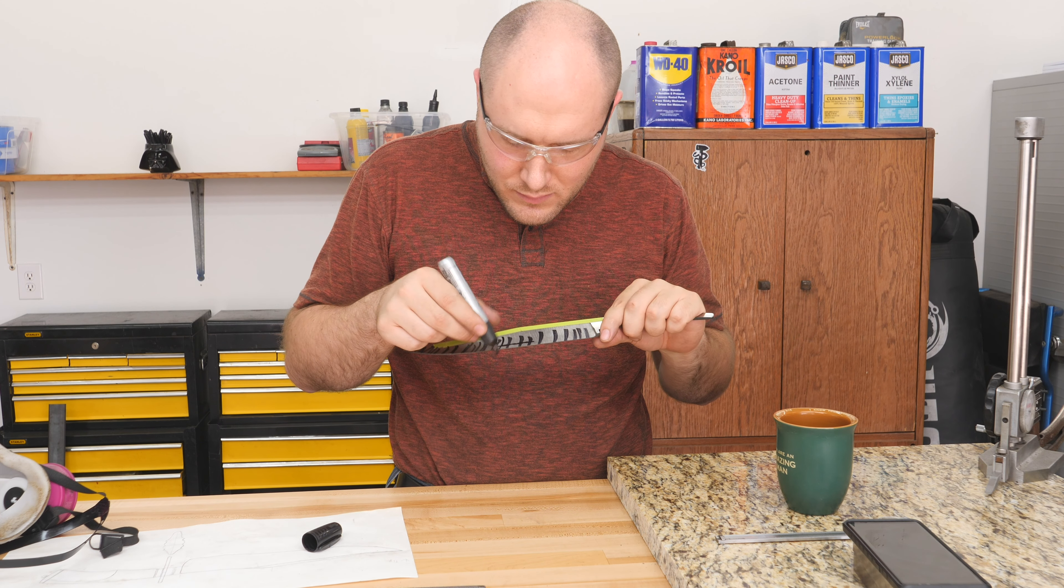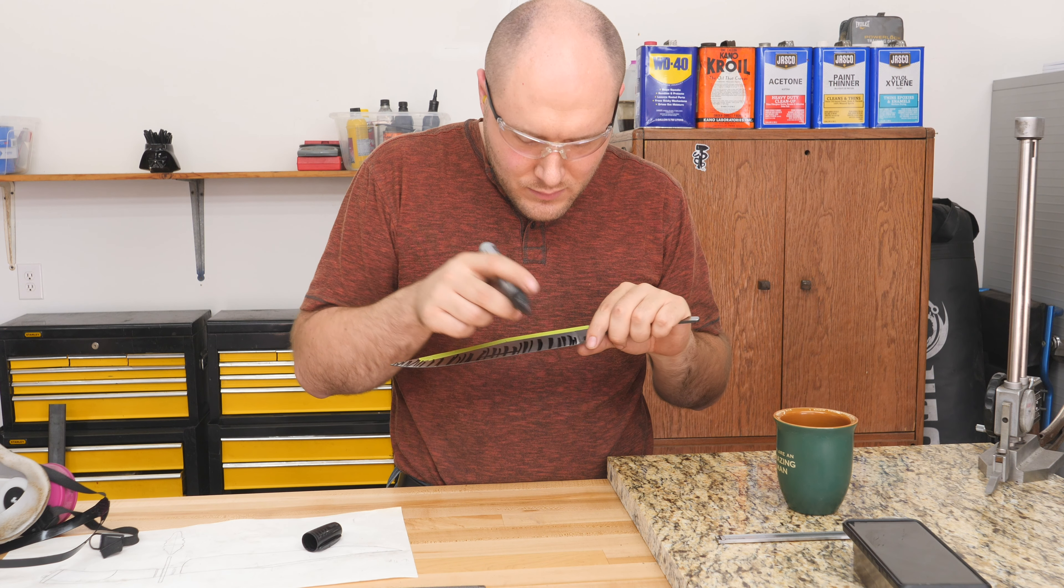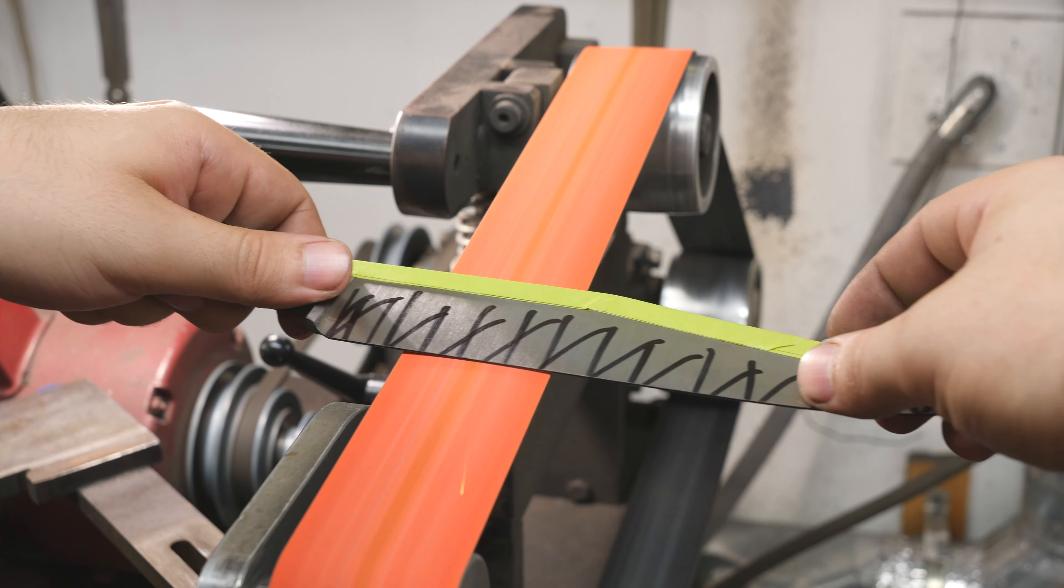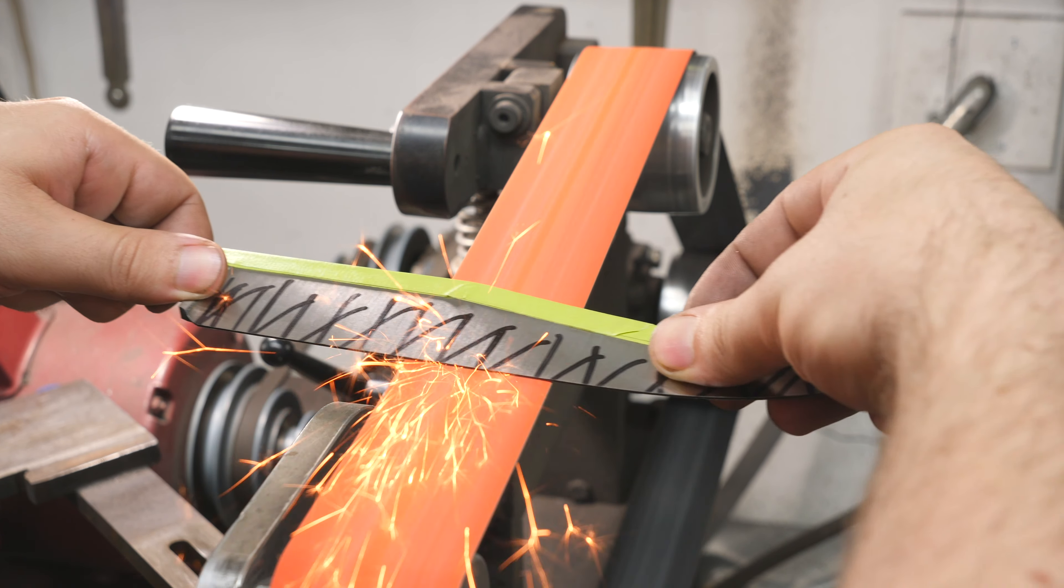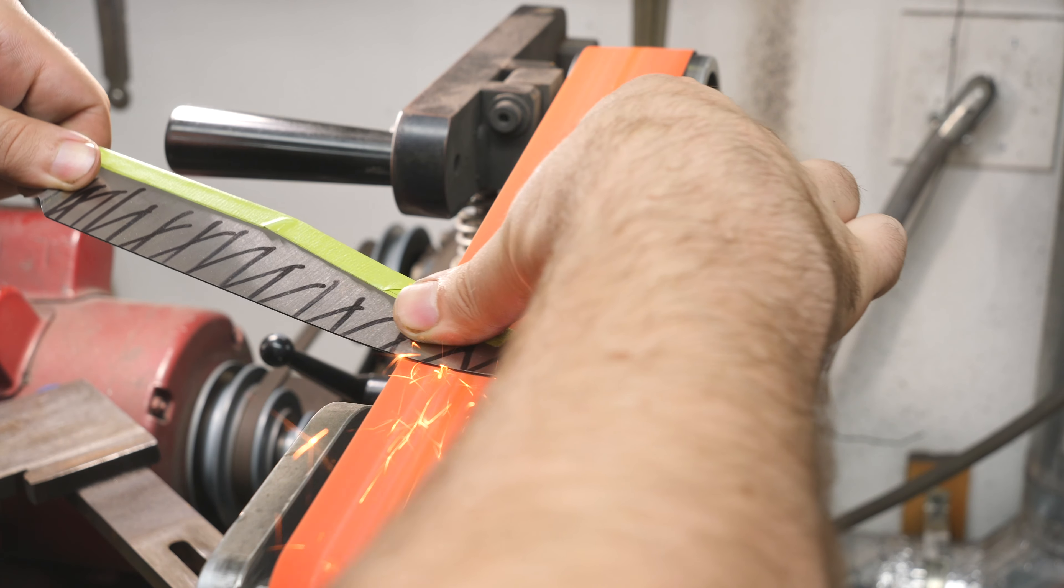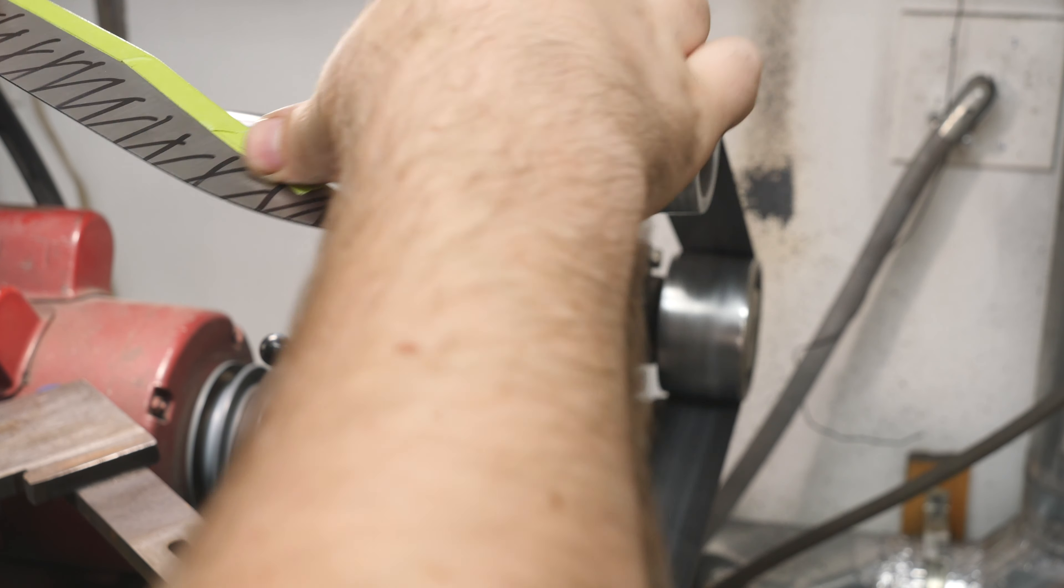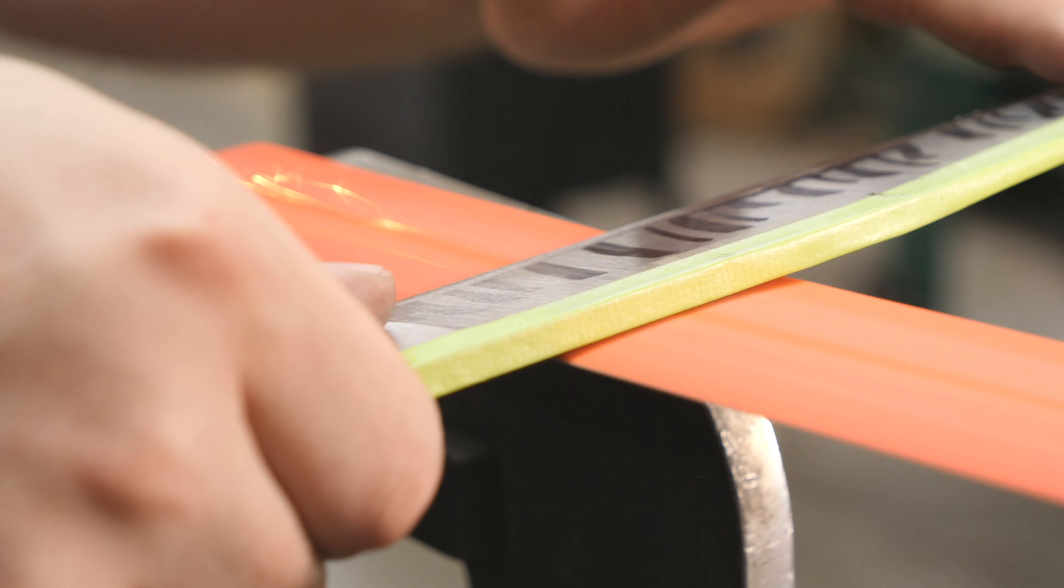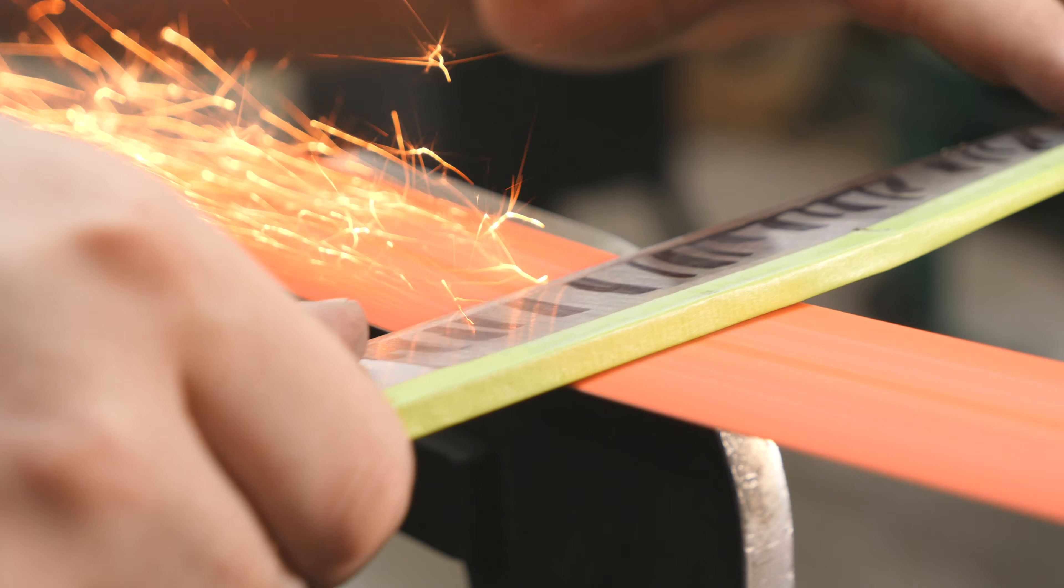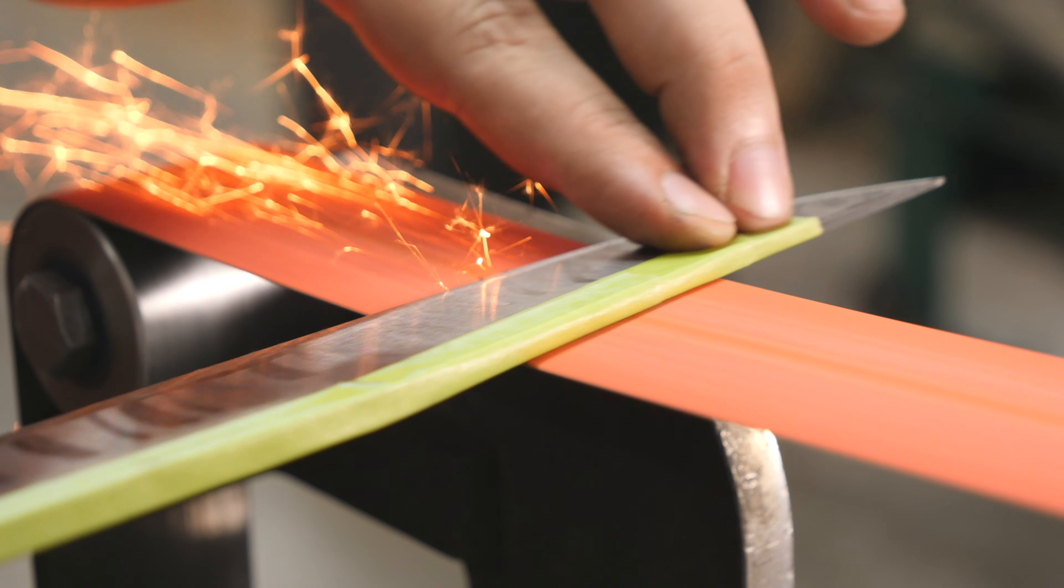These new sharpie marks are so I can see how far up the convex edge goes up the flat bevel. The way I get the convex edge is by using the slack belt up on the top of the grinder. The slack belt is where there's no backer behind it so the belt can have a little pressure on it and make a little bit of a radius on the edge. And the green tape you're seeing is to keep the belt from digging into the spine of the blade.